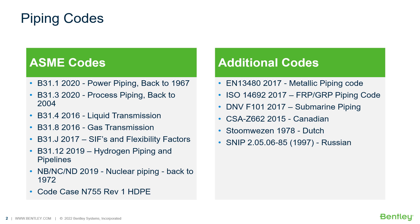Here's a list of the piping codes included in Autopipe. This includes all the code-compliant stress equations, allowables, material properties, stress intensification factors, and flexibility factors.